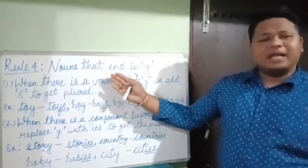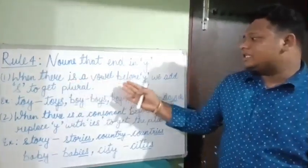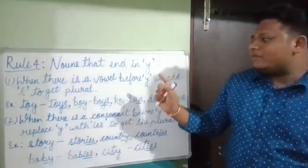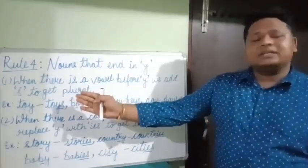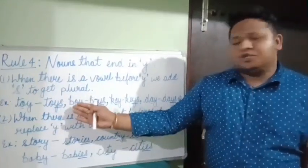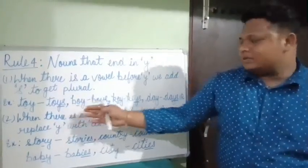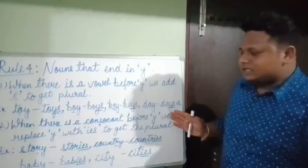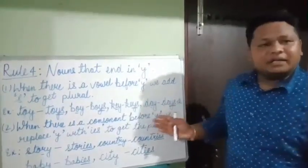Rule number four: nouns that end in Y. There are two conditions. The first condition: when there is a vowel before Y, we add S to get the plural form. For example, toy — vowel O before Y, so toys. Boy — boys. Key — vowel E, so keys. Day — vowel A, so days.